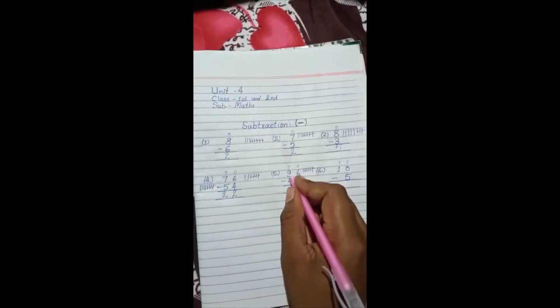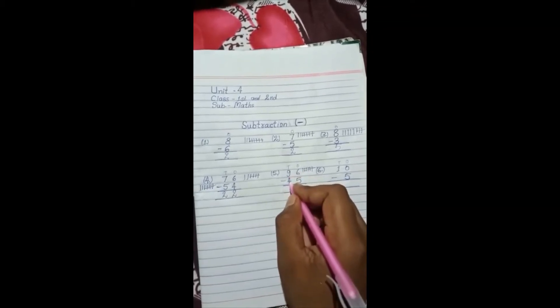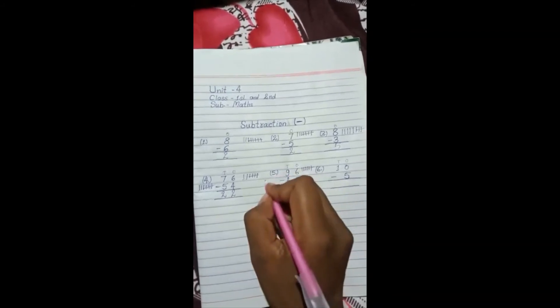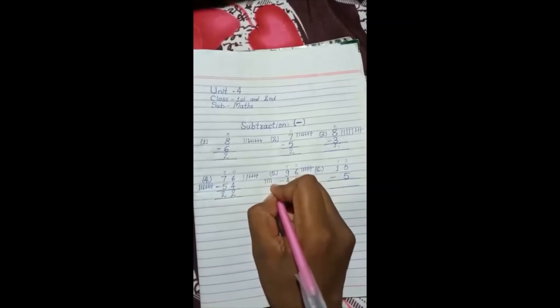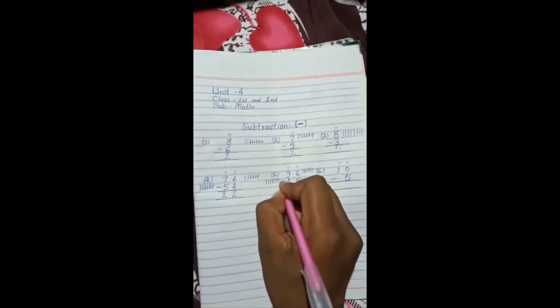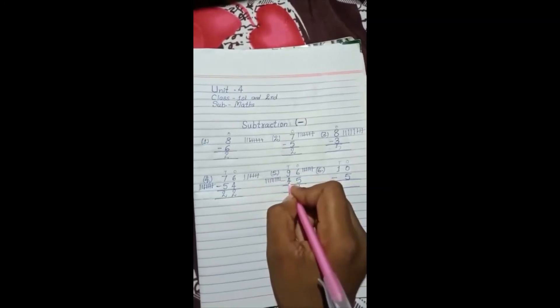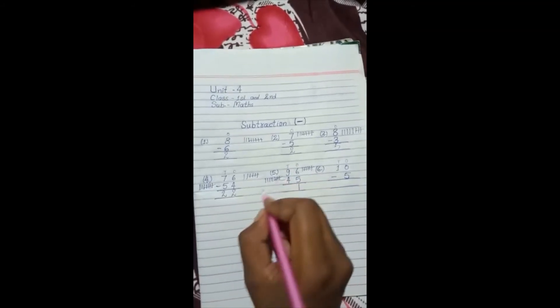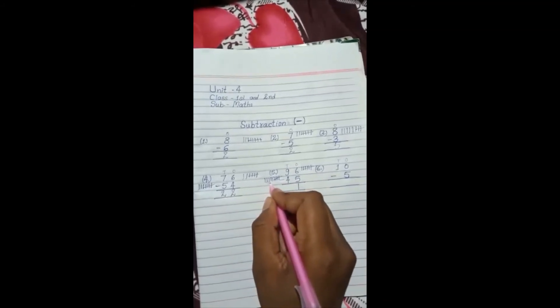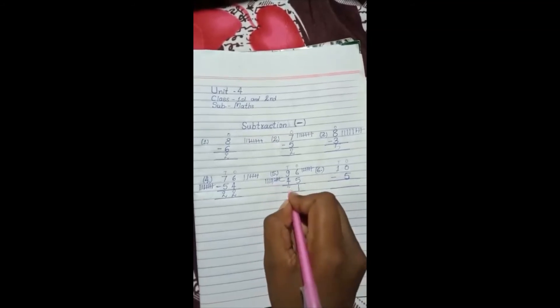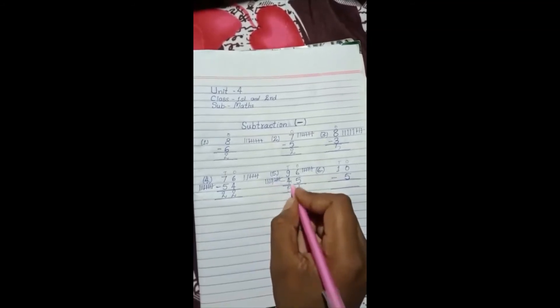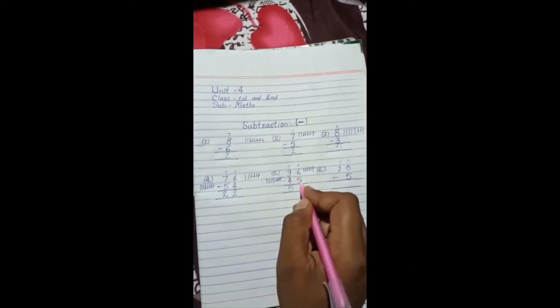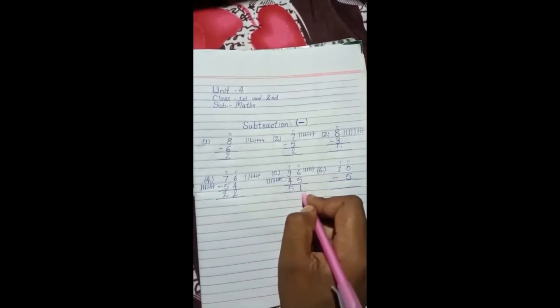Now tens place is 9. Tens place is 9. So 9. From 9 subtract 4. Draw 1, 2, 3, 4, 5, 6, 7, 8, 9 lines. 96 minus 45 is equal to 51.